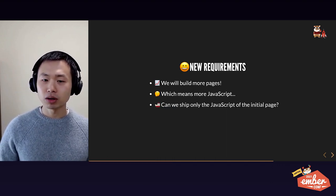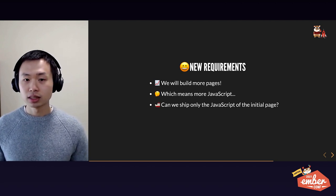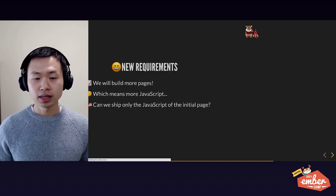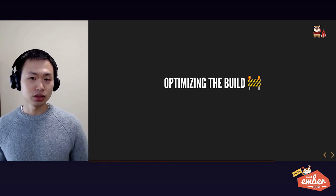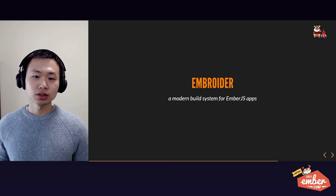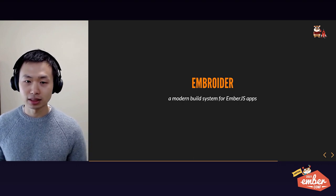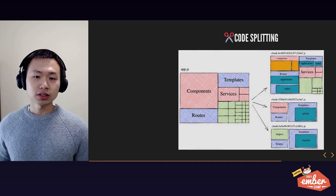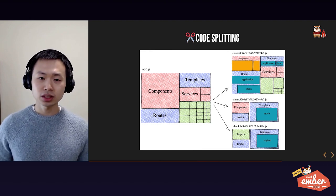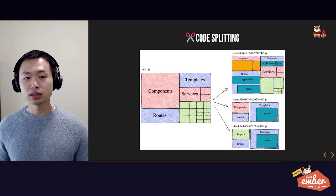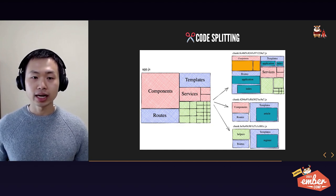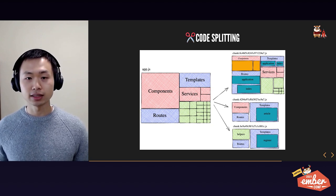The team is thinking: can we ship only the JavaScript needed for the initial page the user is requesting? That way, when working on new pages we won't negatively impact the performance of our home page. The answer from the Ember community is to optimize the build of the Ember app. Let's introduce Embroider — a modern build system for Ember.js applications. Traditionally, Ember CLI's build pipeline looks at all the Ember code in your application and all your dependencies, transpiles that code, and ultimately builds into two separate JavaScript files: one for your application and one for all your dependencies combined.